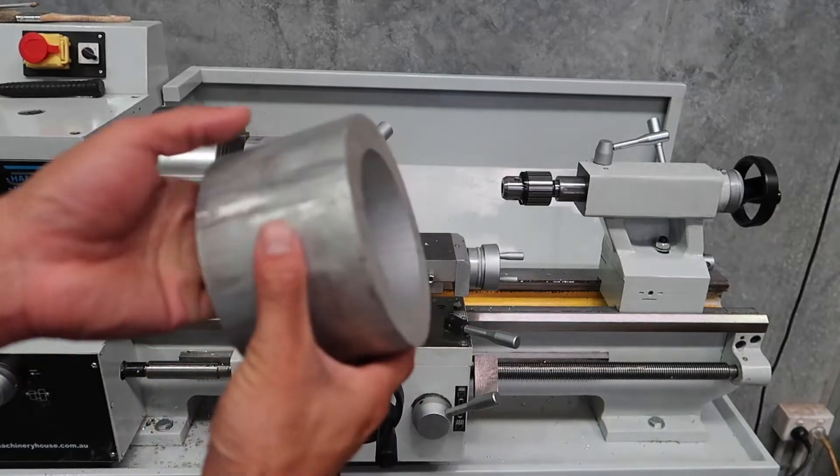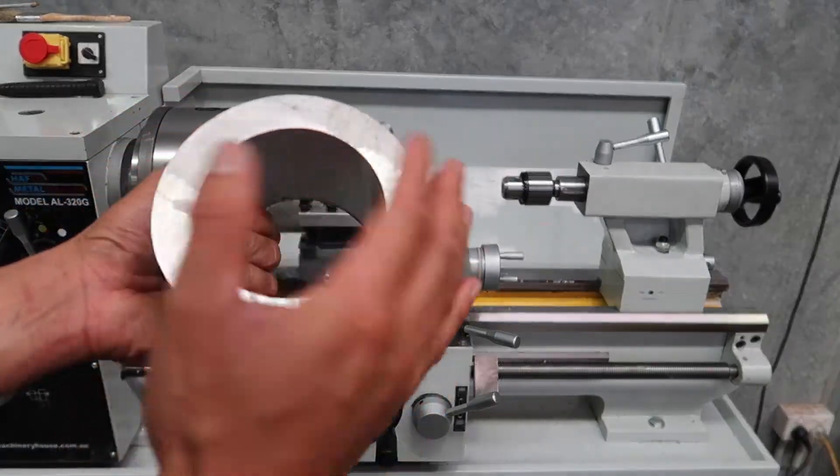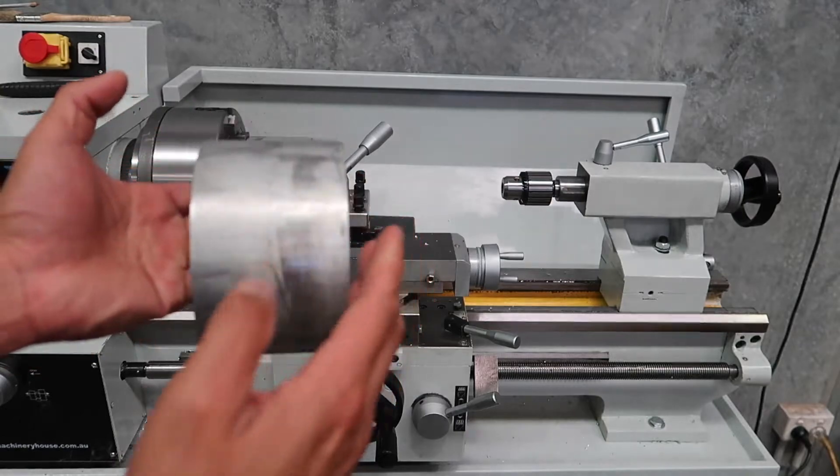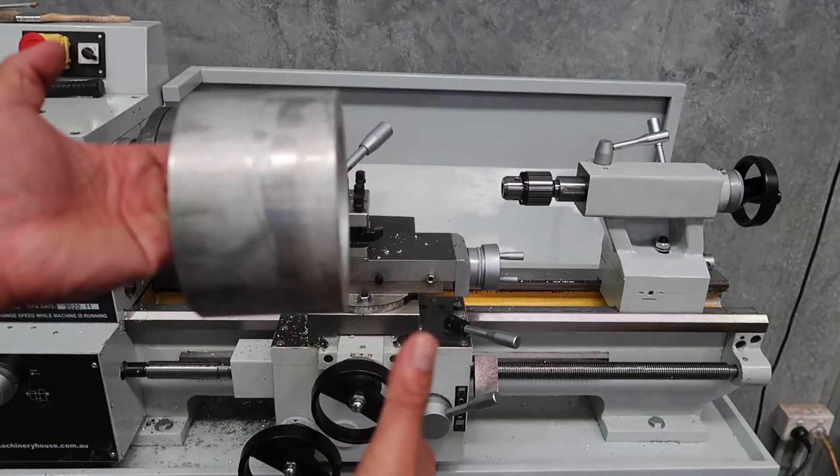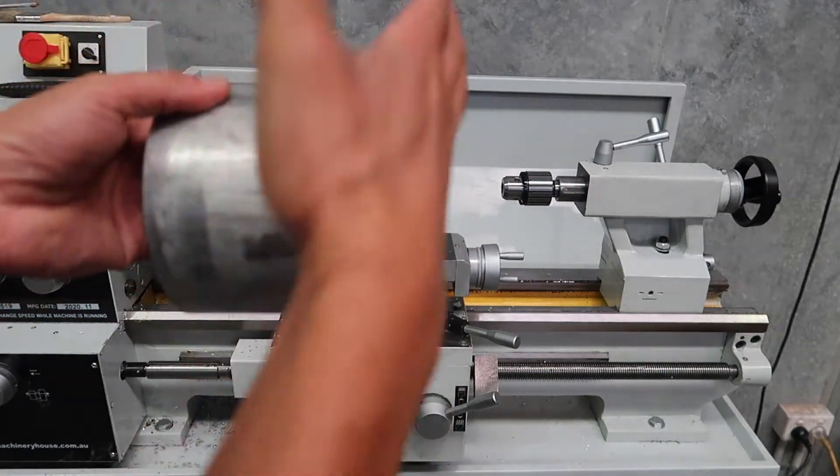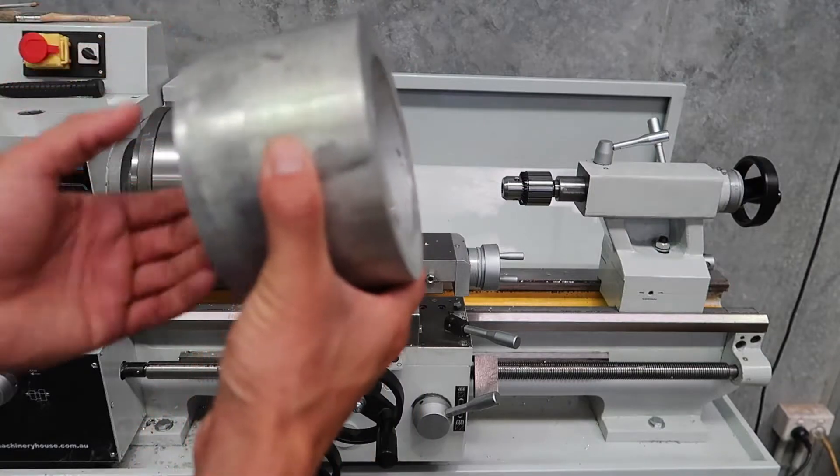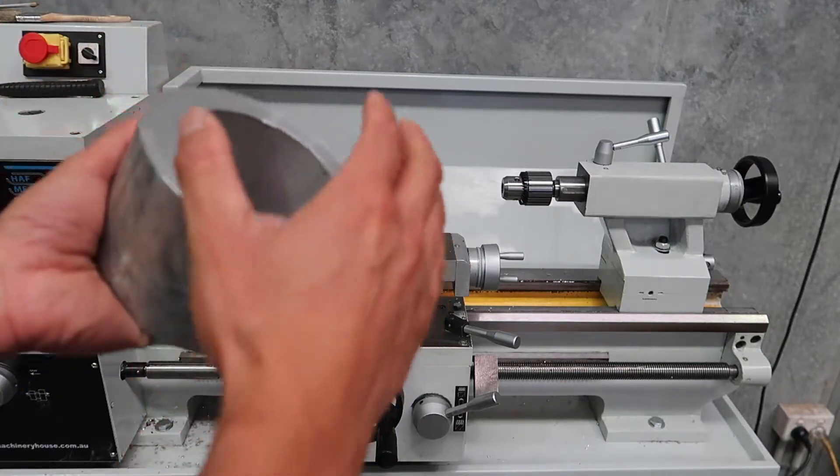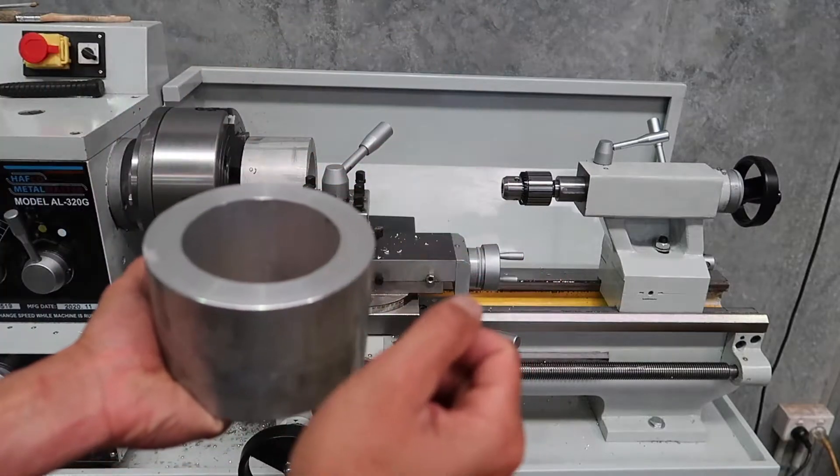So these housings have been cut with a saw. So the first step of it all is to make sure that this is square, rotate it around, square that off. And then that gives me a starting point for the sleeve that's going to be sitting in here.